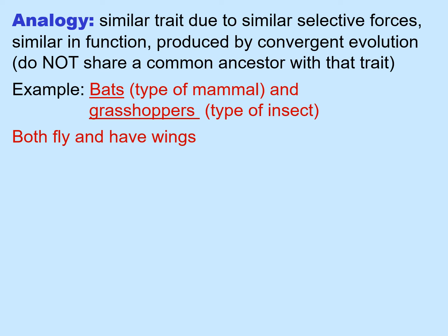Similar selective forces could produce traits that look alike and are similar in function. These are produced by convergent evolution, but not because the two creatures share a common ancestor. We call these analogous traits.